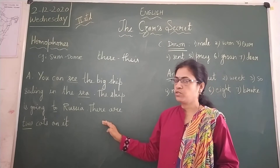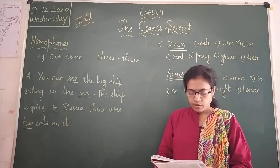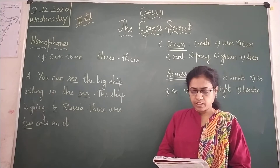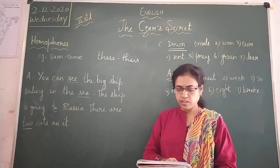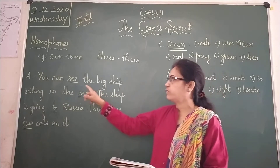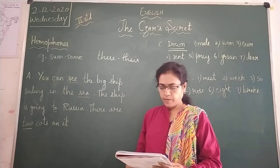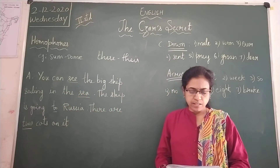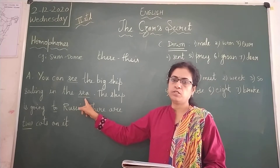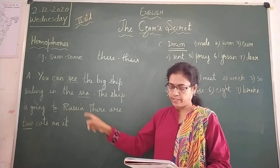Already I have written on the board so you can write in your textbook. You have to just write the correct meaning there. Correct the colored words — that is S-C-E, they have given that instead of S-E-E, so S-E-E you have to write. And then you can see the big ship sailing in the sea — S-E-E, then you have to write the correct word there.